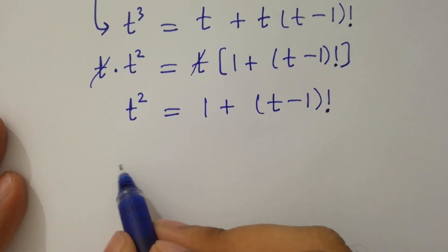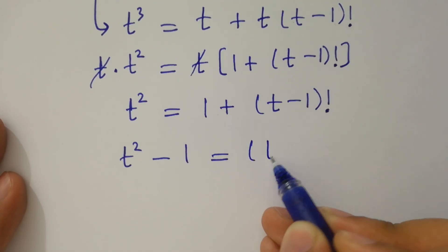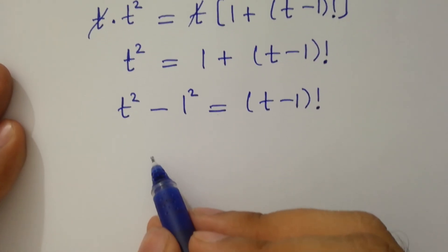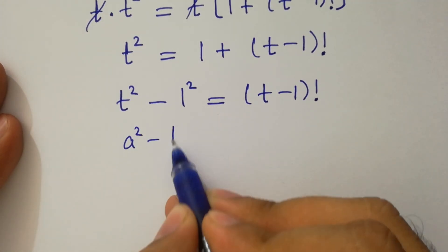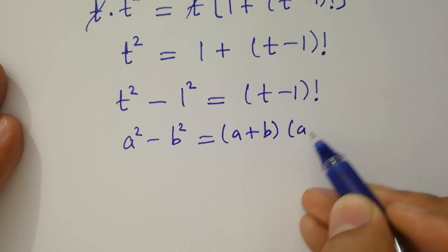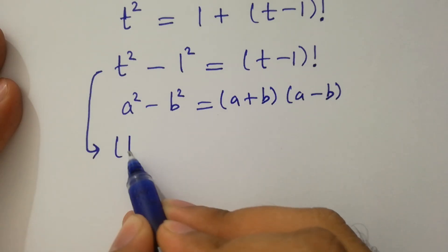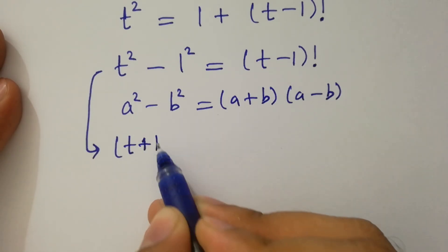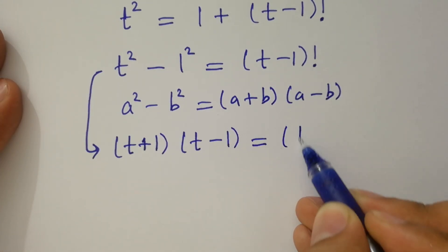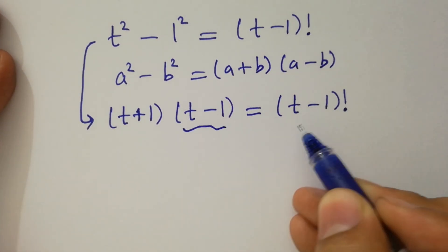This can be written as t squared minus 1 equals (t-1) factorial. We know the formula a squared minus b squared equals (a+b)(a-b), so applying it we get (t+1)(t-1) equals (t-1) factorial.